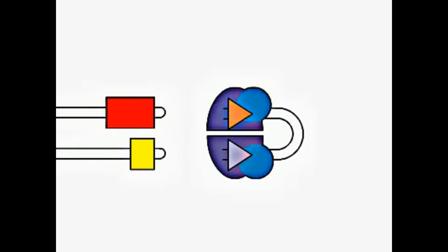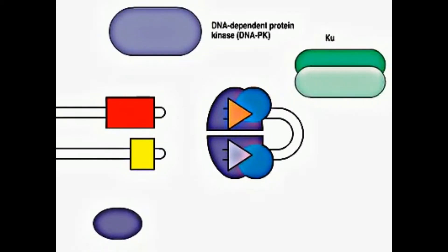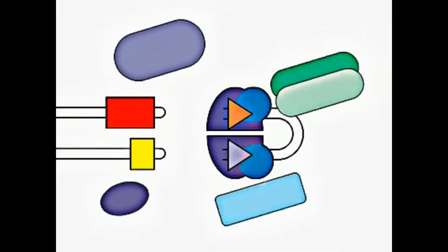Additional proteins, DNA-dependent protein kinase, Ku, Artemis, and a DNA ligase in XRCC4 dimer are incorporated into a complex with the RAG proteins.